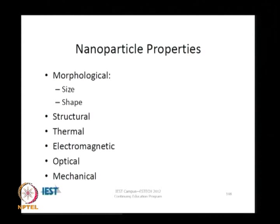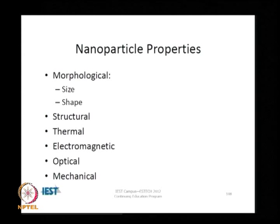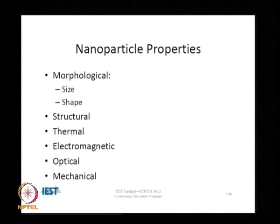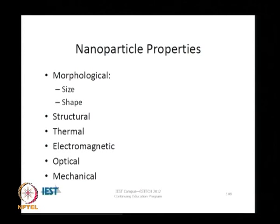When we look at nanoparticle properties, they are not too dissimilar from the properties of particles listed earlier in this course. There are the morphological properties — size and shape — and structural properties. In terms of functional property enhancement, there is an emphasis on characterizing thermal properties, electromagnetic properties, optical properties, and mechanical properties of nanoparticles, because it is in these properties that they show particularly significant differences in their nano form compared to bulk form.